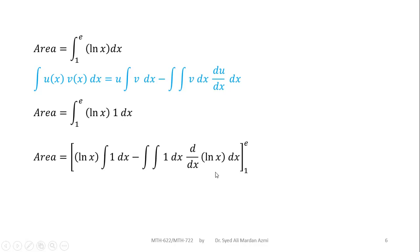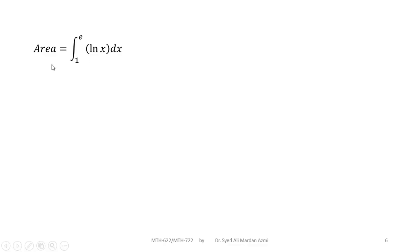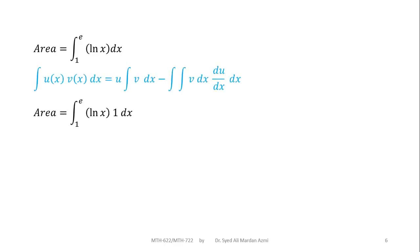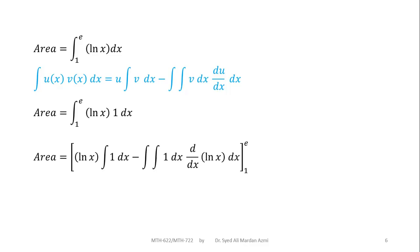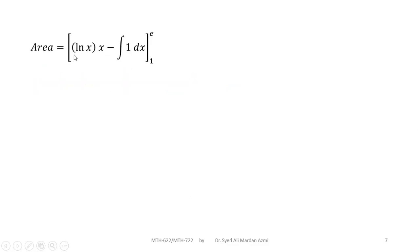In the next step we perform the simplification. Note that the area equals the integral from 1 to e of natural log of x dx. When applying integration by parts, we first apply the formula and then apply the limits to the result. The integration of 1 is x, and the derivative of natural log of x is 1 over x, so x and 1/x cancel, giving us natural log of x times x minus the integral of 1 dx, which is x.